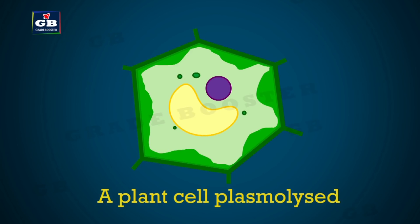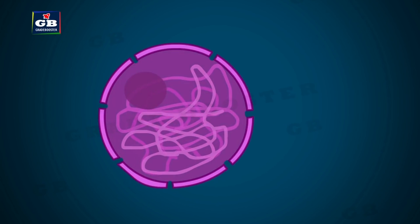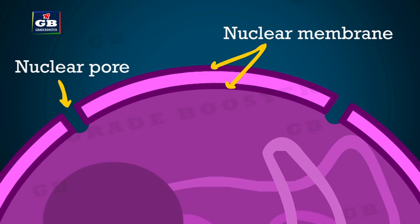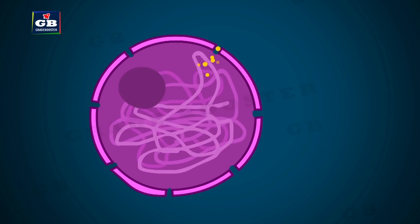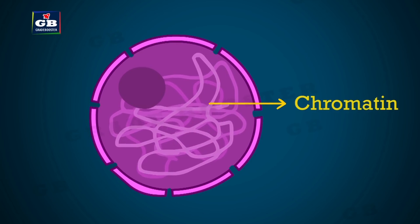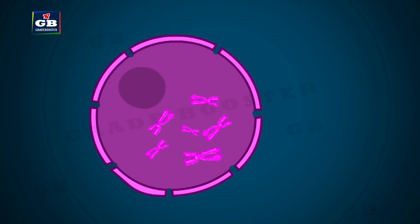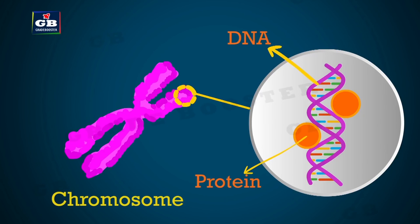The nucleus is covered by a nuclear membrane with two layers. The nuclear membrane also has pores through which materials enter and exit the nucleus. The nucleus contains chromatin, which looks like a tangled thread. During cell division, chromatin changes into rod-like structures called chromosomes. Chromosomes contain DNA and protein.